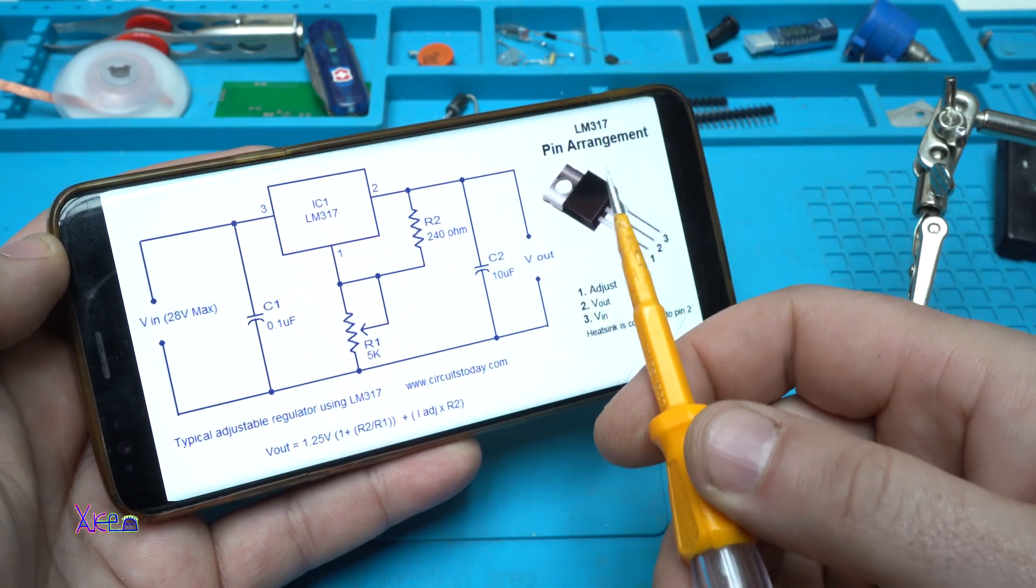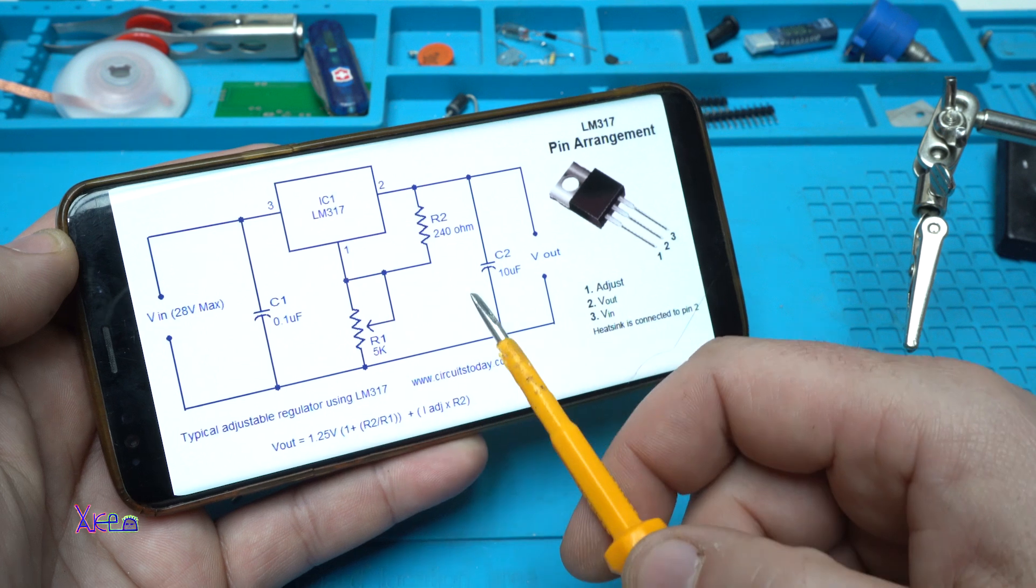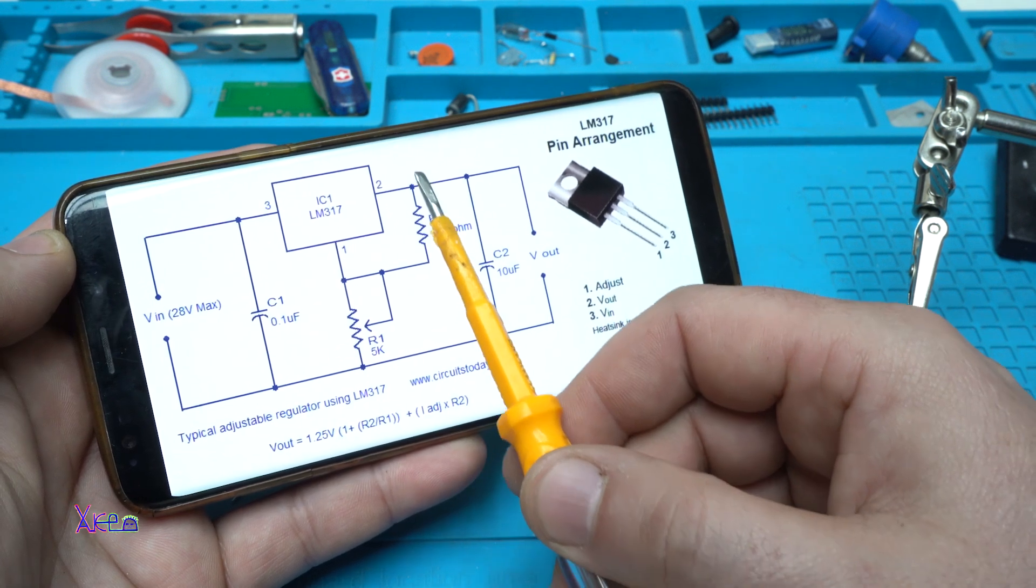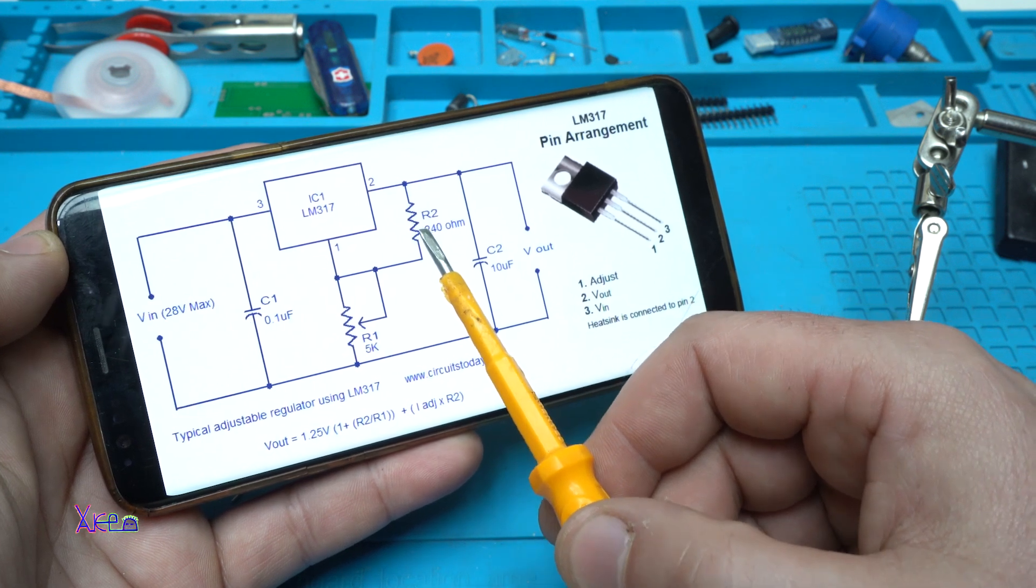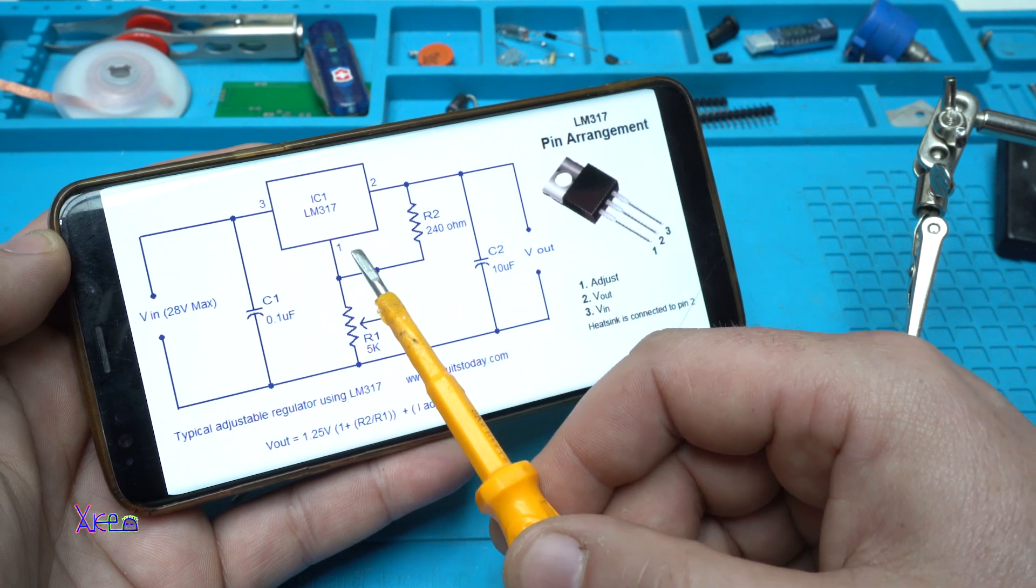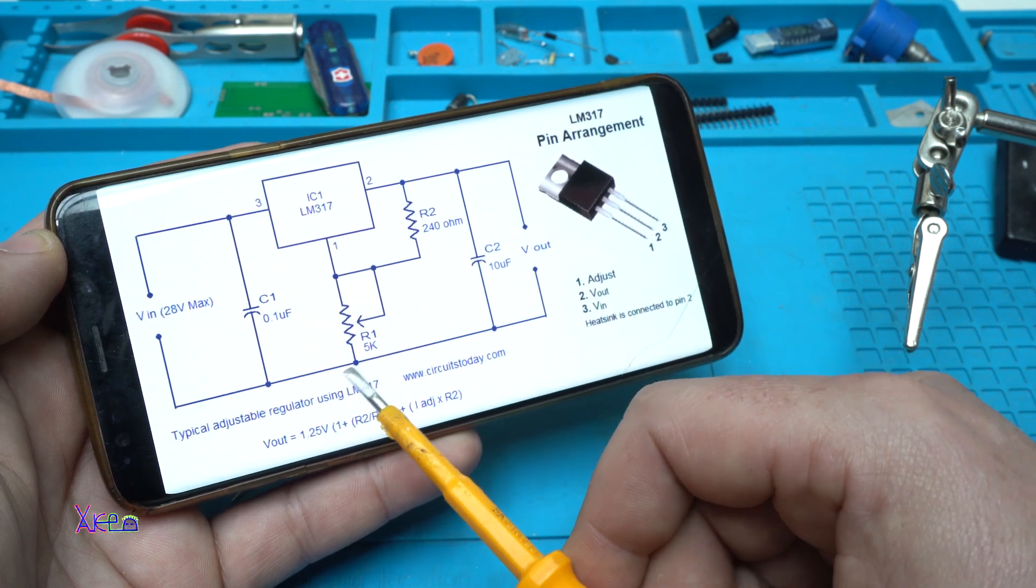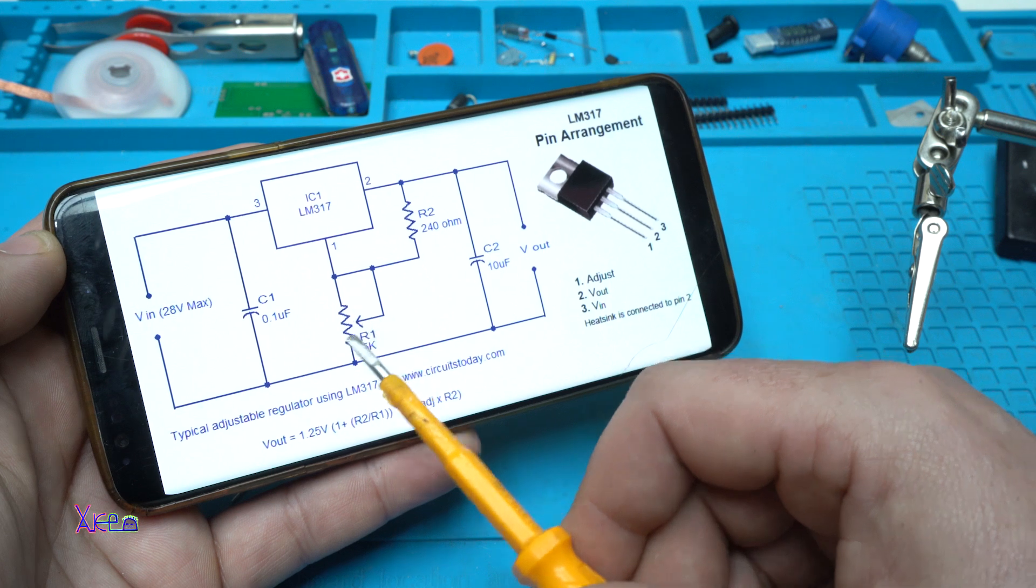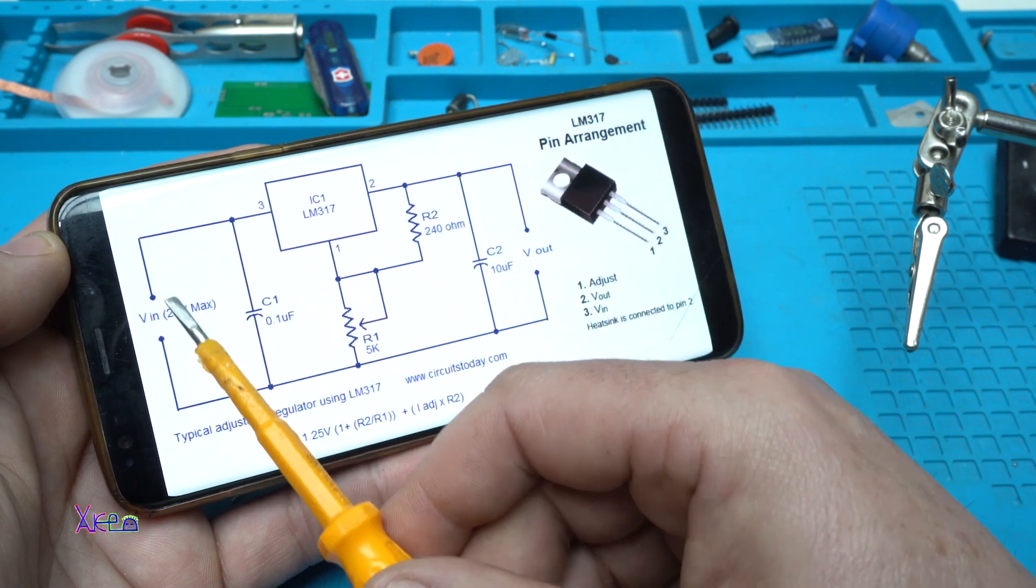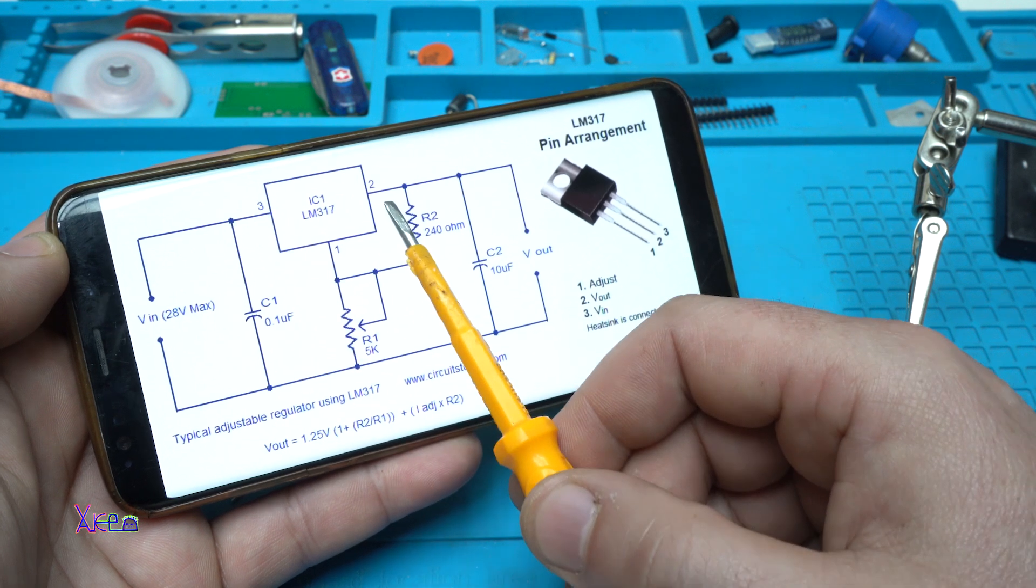For making a voltage regulator using LM317, here is the circuit diagram. Between pin 1 and 2, you need to add the resistor of 220 ohms. Here it says 240, I don't have that. Between 1 and ground, we're gonna add the multi-turn potentiometer.